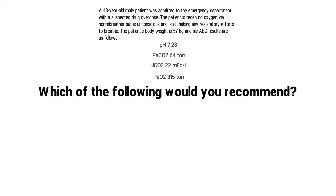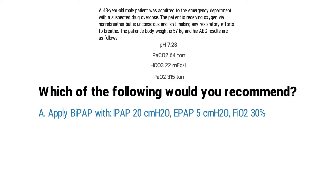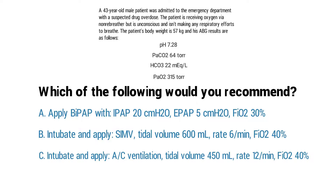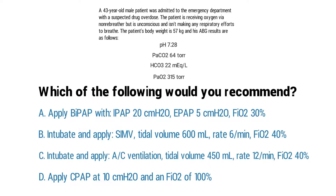His ABG results are as follows: pH of 7.28, PaCO2 of 64, bicarb of 22, and a PaO2 of 315. Which of the following would you recommend? A) Apply BiPAP with an IPAP of 20, an EPAP of 5, and an FiO2 of 30%. B) Intubate and apply SIMV with a tidal volume of 600, a rate of 6, and an FiO2 of 40%. C) Intubate and apply assist control ventilation with a tidal volume of 450, a rate of 12, and an FiO2 of 40%. Or D) Apply CPAP at 10 centimeters of water pressure with an FiO2 of 100%.